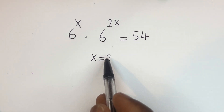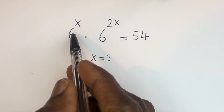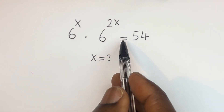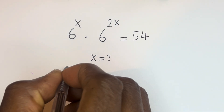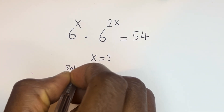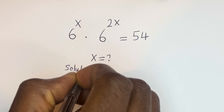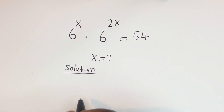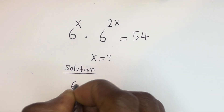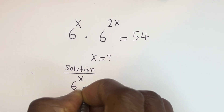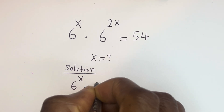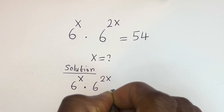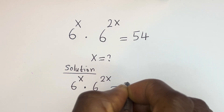Hello. How to solve for s in this equation: 6 to the power of s multiplied by 6 to the power of 2s is equal to 54.